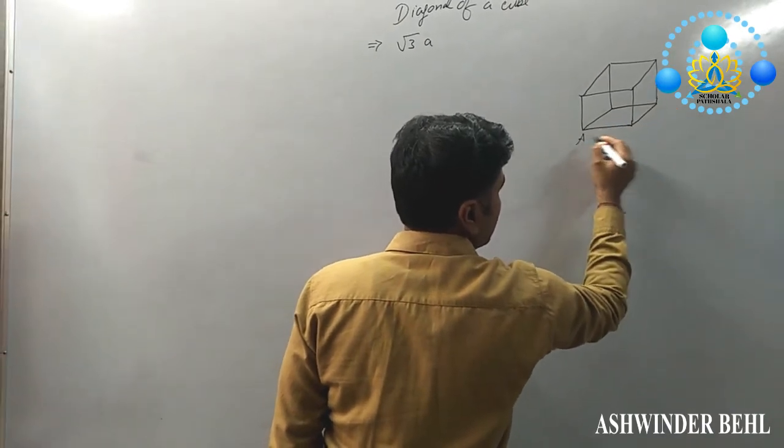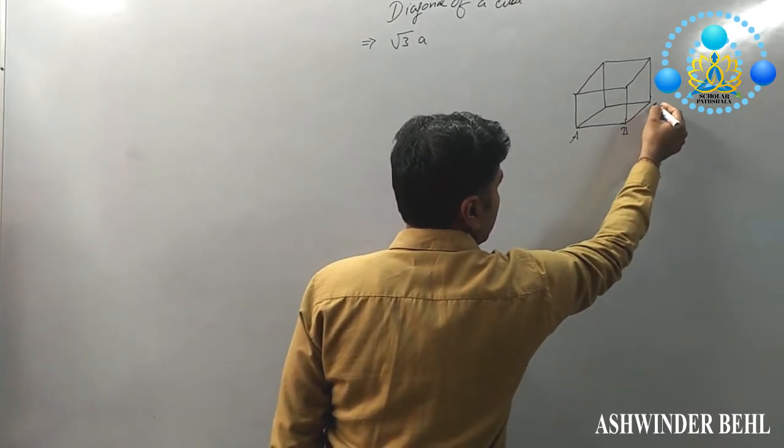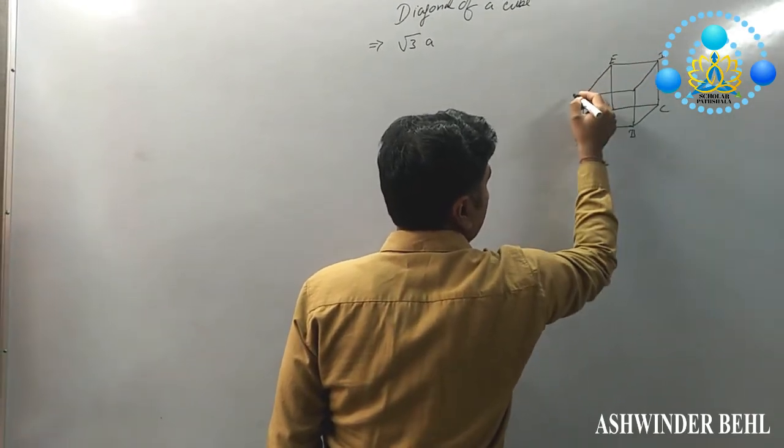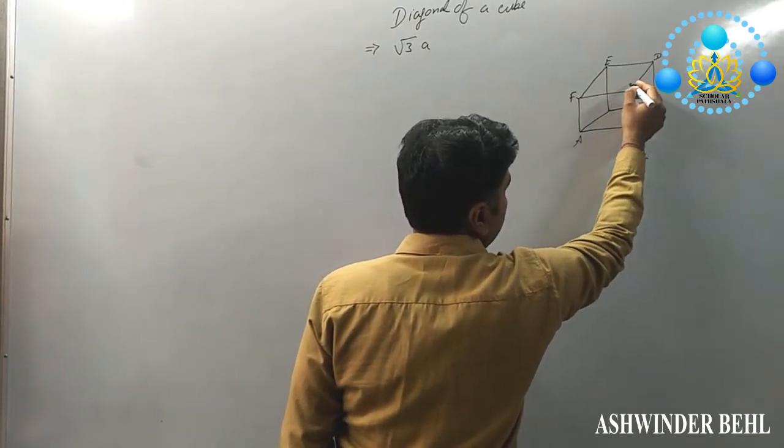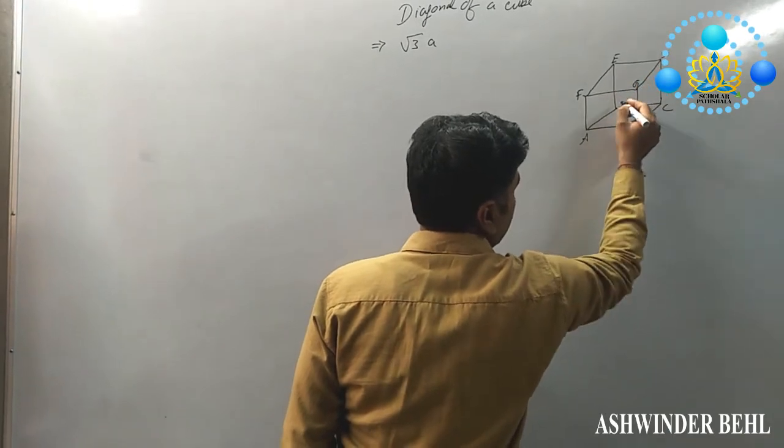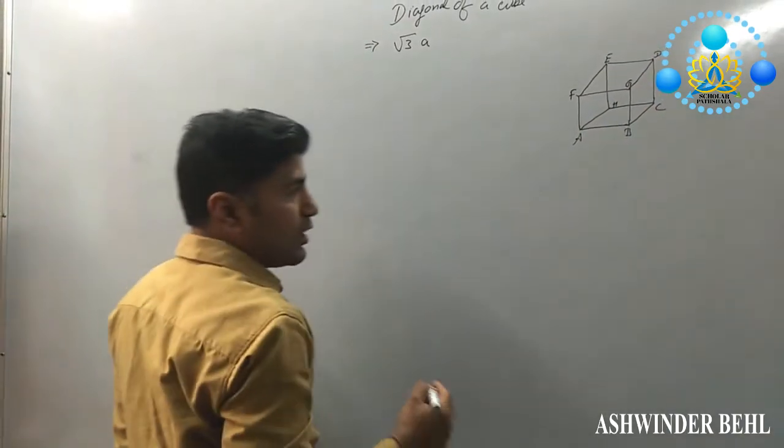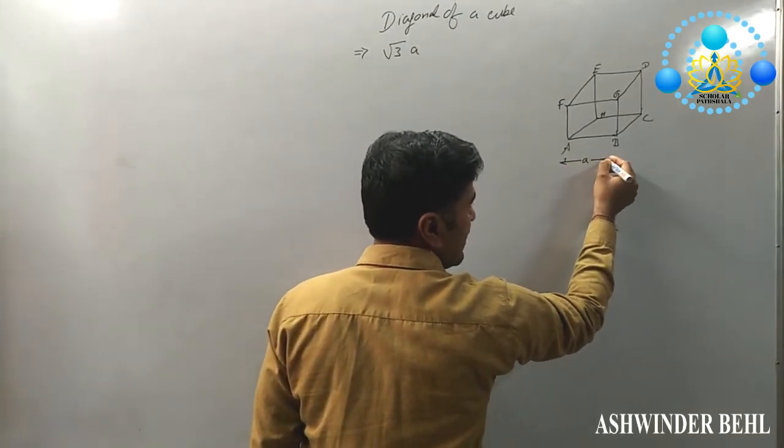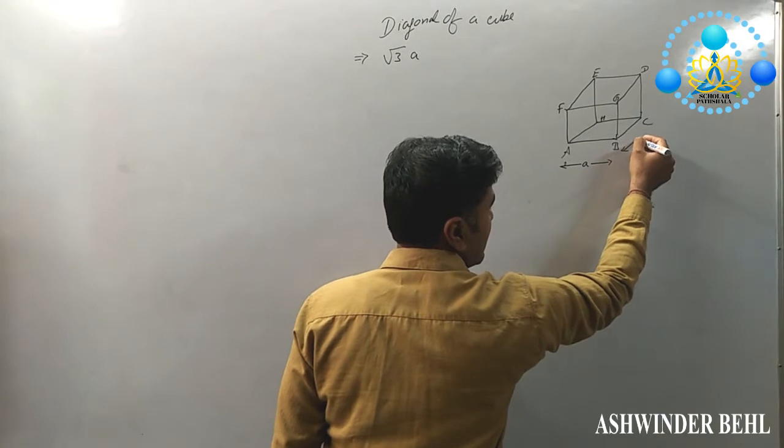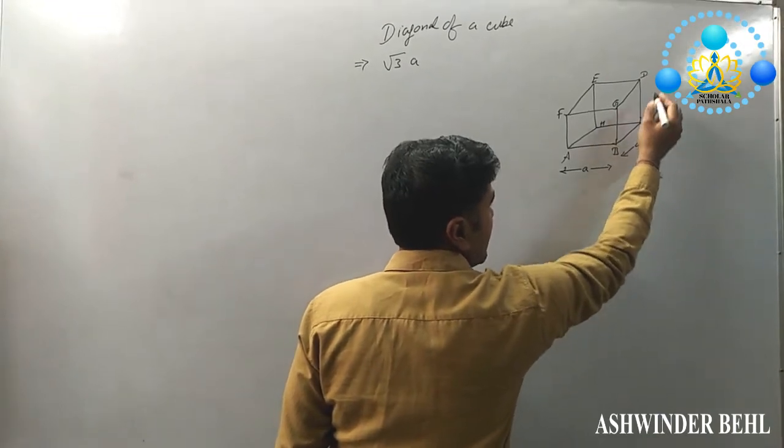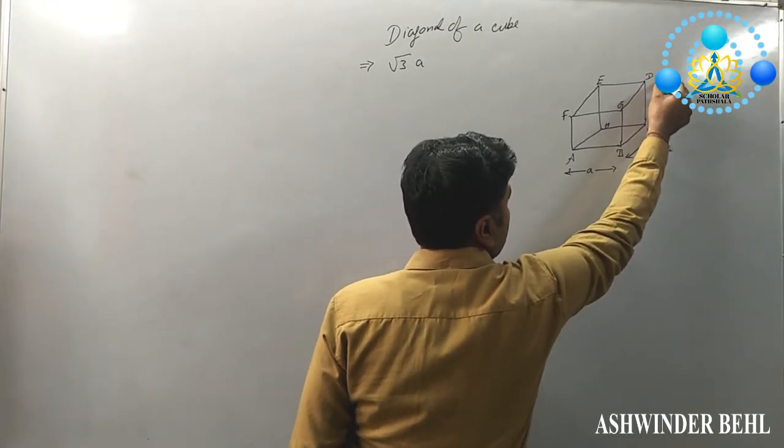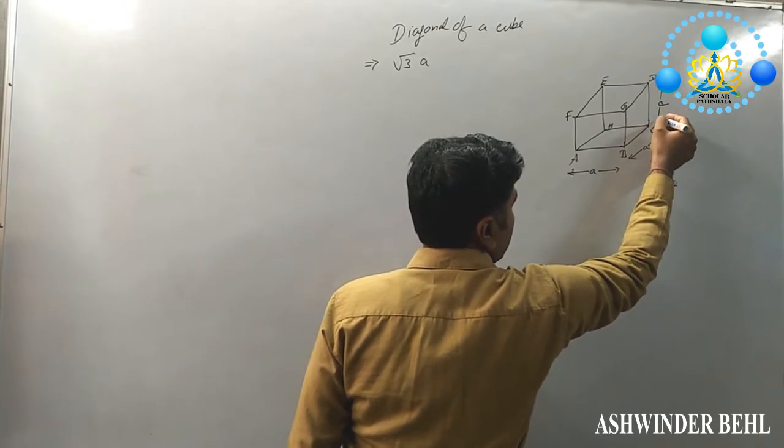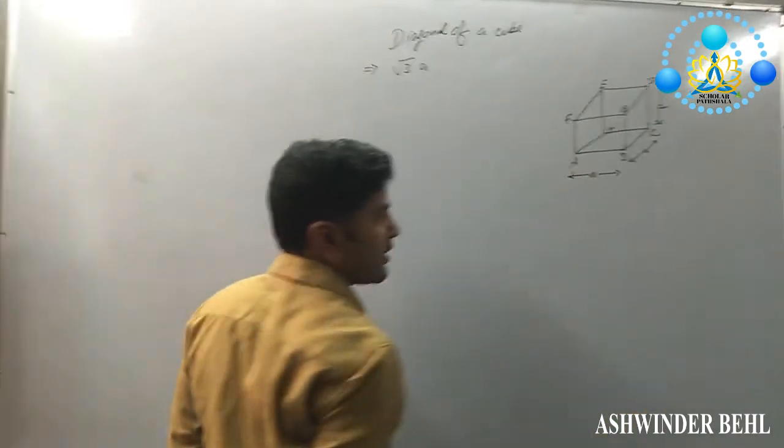So that is A, that is B, that is C, that is D and that is E, F, G and that is H. Now we can suppose AB is A, same as BC, that is A and same as CD, that is A.